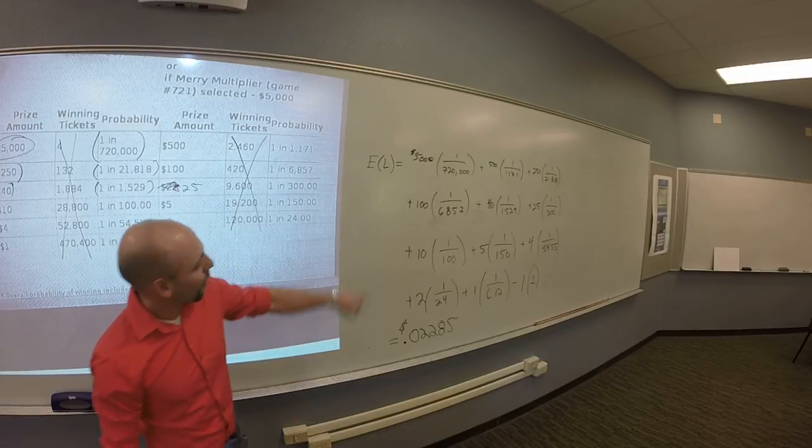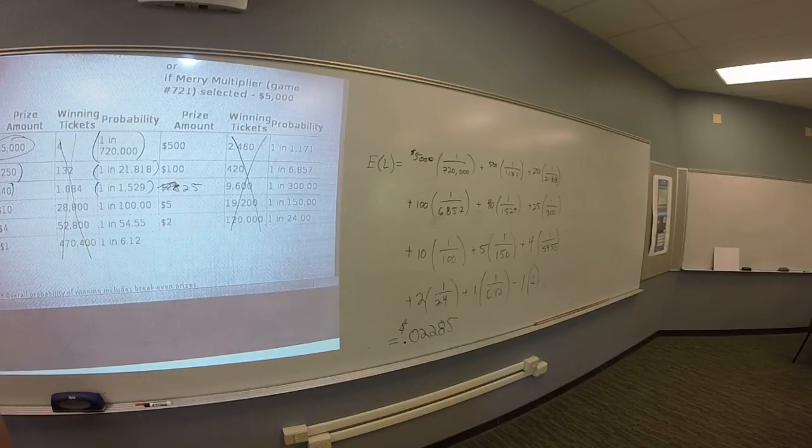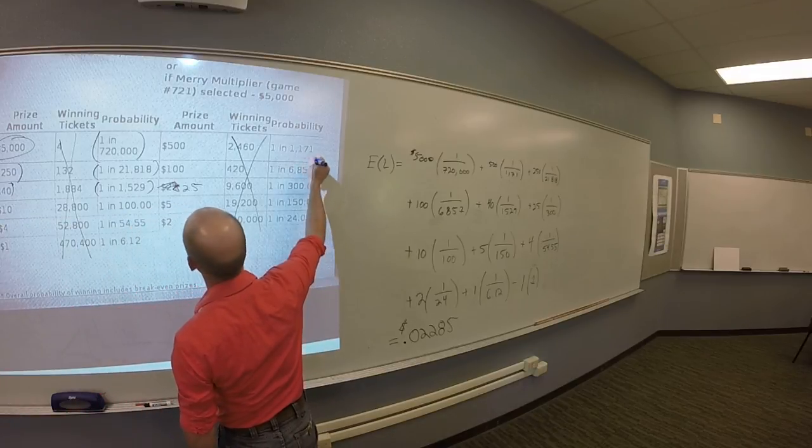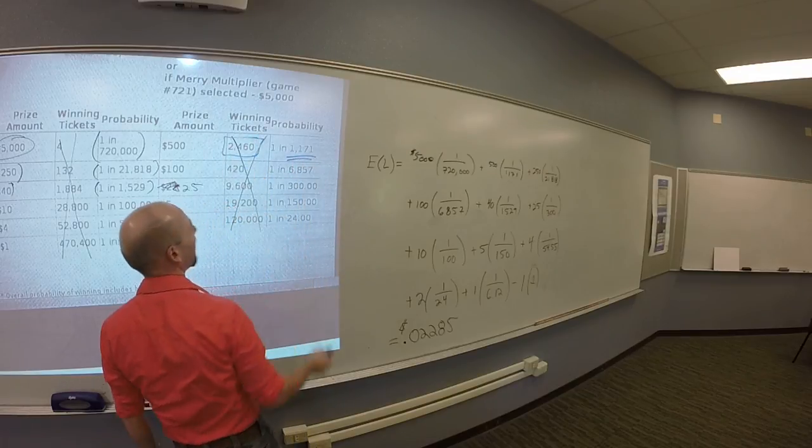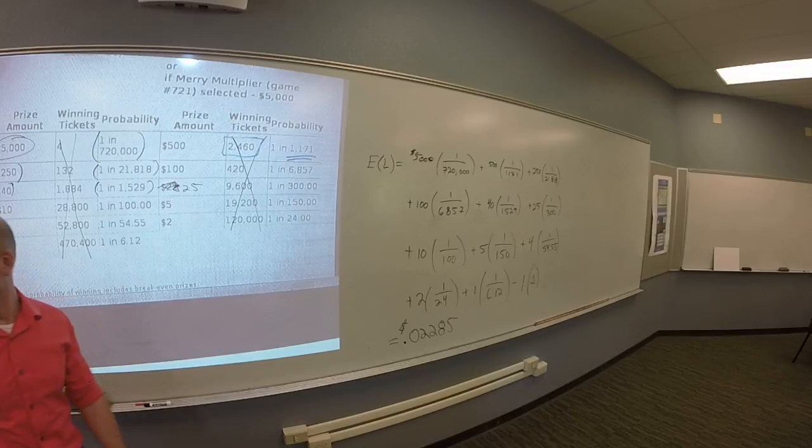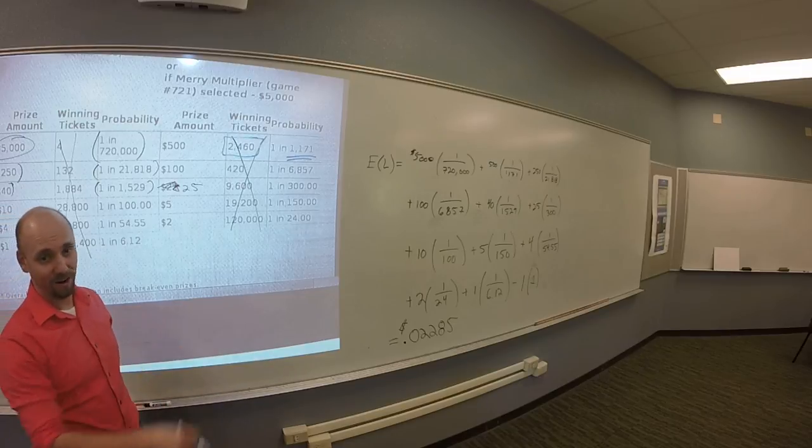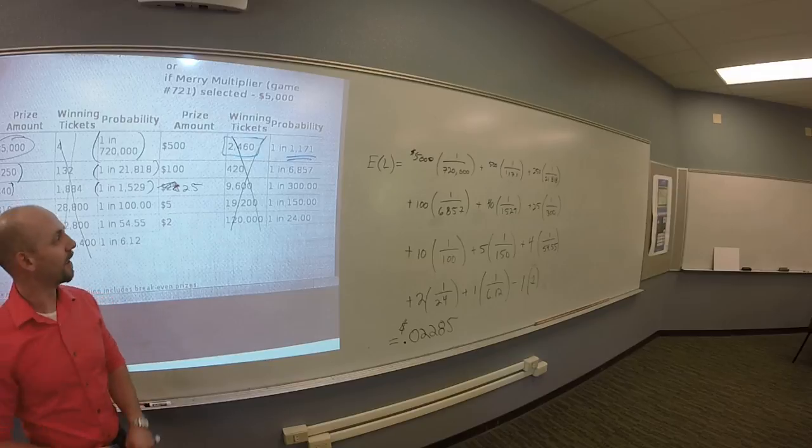So, what's the problem? Where's the typo in this? There's a typo in here from the state of Colorado. Where is it? Price amount 500 probably should be 24 winning tickets. Yeah, there's this number, right? Like, there's a lot of $500 tickets. You know what they did?